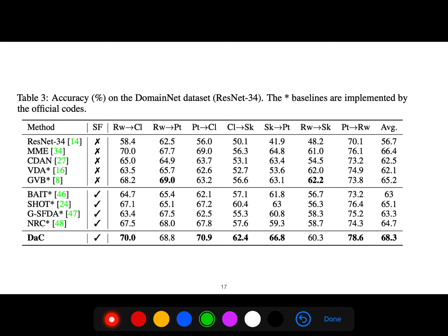You can see the accuracy on the DomainNet dataset from different sources to different targets using different methods. For this paper's method, it achieves 66% accuracy.